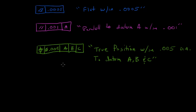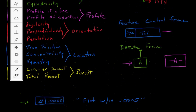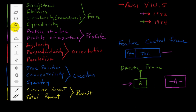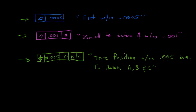In future videos we are going to go into detail about what exactly all this means. But at least if you see this on a drawing, you'll know how to read it. Based on what I've just told you, you should know how to read the rest of these — for example, concentricity to A within 0.005, or perpendicular to B within 0.010. In the advanced GD&T videos we are going to drill down into great detail on all of these.